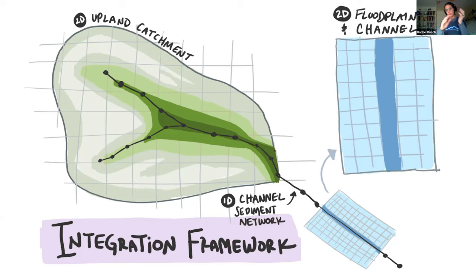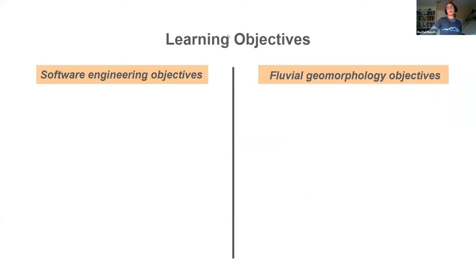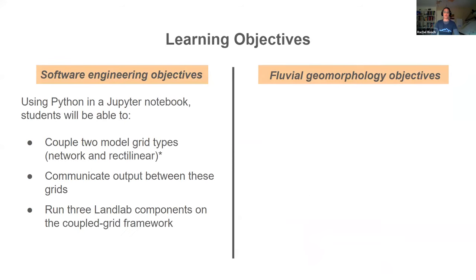Here is the conceptual model for our simulation. We have three different types of grids: a large-scale rectilinear grid representing our upland catchment where we simulate storm events; a network-type grid — a vector channel network with nodes — laid along the channel; and a finer downstream floodplain grid. We simulate storm events on the upland catchment, gather those and feed them to the network grid, transport sediment along it, then pass results to the finer downstream floodplain where we simulate infiltration from the storm event.